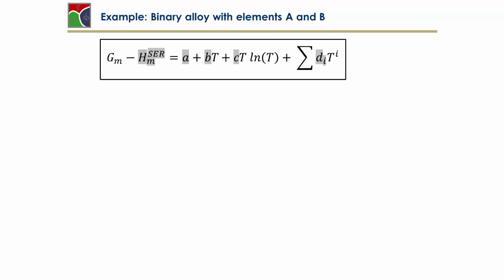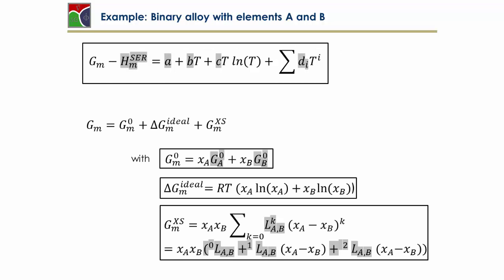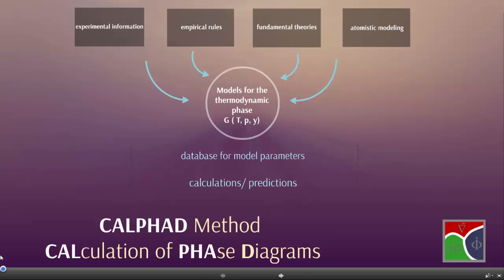Where the pure phases, pure element phases are just temperature-dependent parameters, and the mixture phase has additional parameters like the so-called Redlich-Kister polynomials.